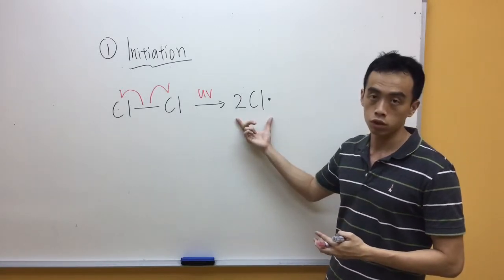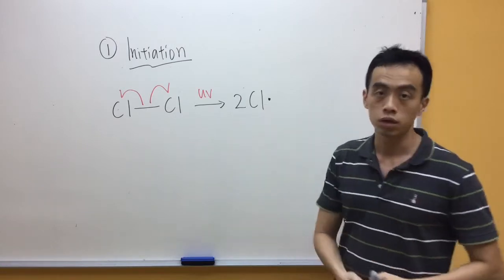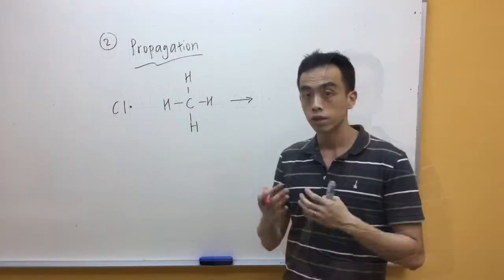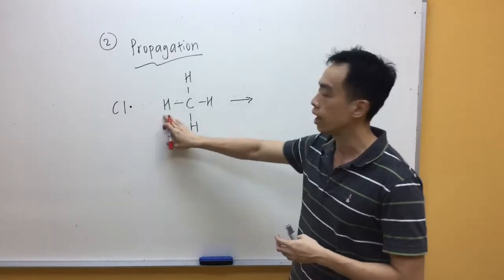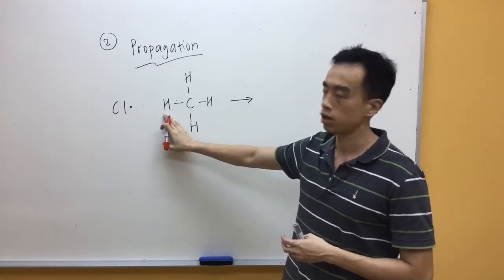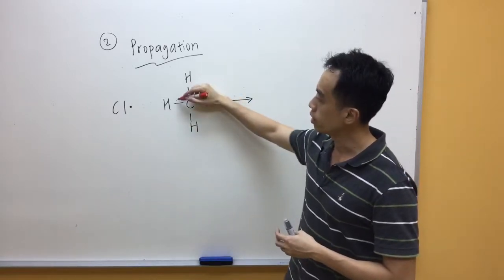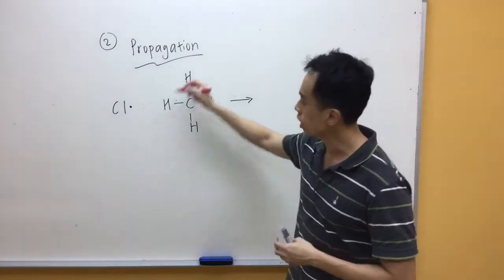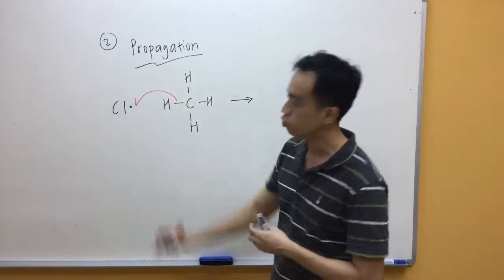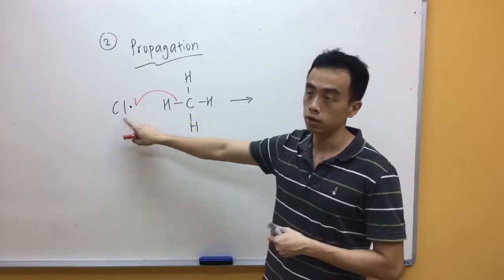It forms our chlorine radicals which will be involved in the next step, which is our propagation step. So the next step will be our propagation step, where our chlorine radical will take our hydrogen away from my alkane. So what happens is hydrogen will take back its electron from this CH bond and forms a bond with Cl, as shown by this arrow pushing. So hydrogen basically will take its own electron and form a bond with Cl.